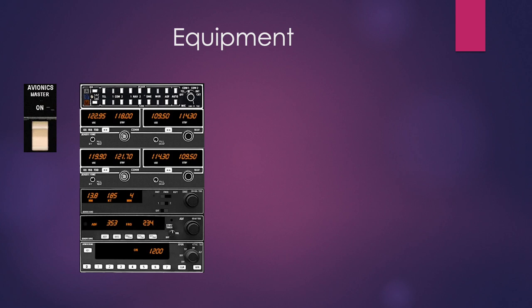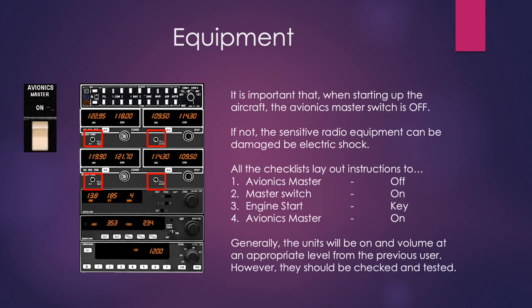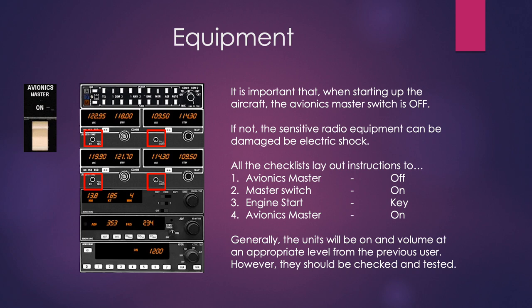To turn all of this on and off, there are individual on/off switches. However, many aircraft are fitted with an avionics master switch — a single power source for all these separate devices, so we can turn them all on and off in one go. We need to be careful because our radio navigation aids are sensitive to electric shock, so we must start the aircraft with the avionics master switch off. Once the aircraft is started and running, then we turn on the radios. This prevents electric shock as the engine starts. The avionics master switch also means volumes will already be set.